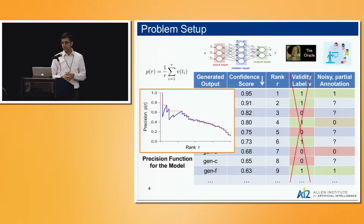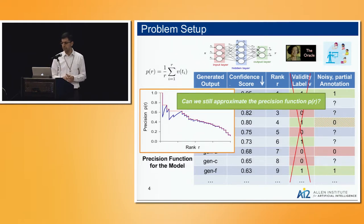Now the problem is you don't have access to that oracle. What you get is a noisy and partial annotation. You get a few ones, you mislabel some ones as zeros and vice versa, and you get a bunch of question marks that you didn't have money to annotate. The question is, can we still get a good approximation of the precision function PR?